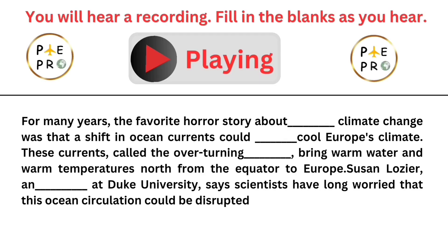For many years, the favourite horror story about abrupt climate change was that a shift in ocean currents could radically cool Europe's climate. These currents, called the overturning circulation, bring warm water and warm temperatures north from the equator to Europe. Susan Lozier, an oceanographer at Duke University, says scientists have long worried that this ocean circulation could be disrupted.